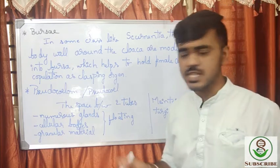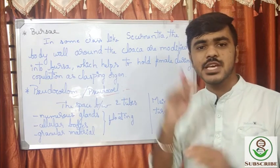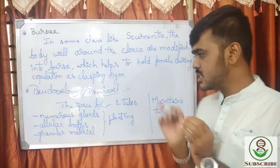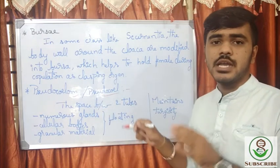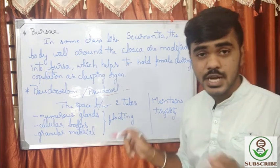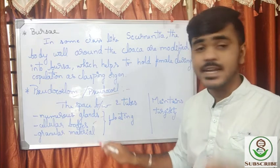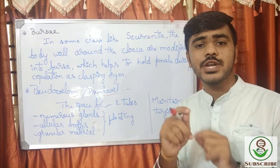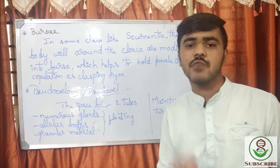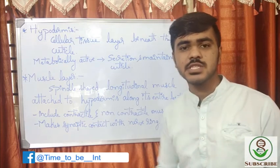The pseudocoelom is the space between the inner tube and the outer tube. It contains numerous glands, cellular bodies, and granular materials, all floating in the body fluid. These help to maintain the turgidity of the body.